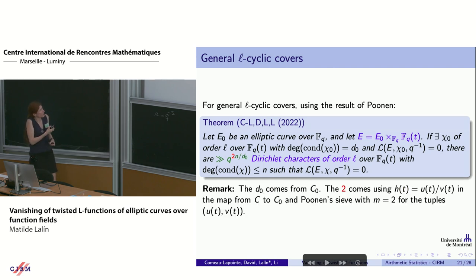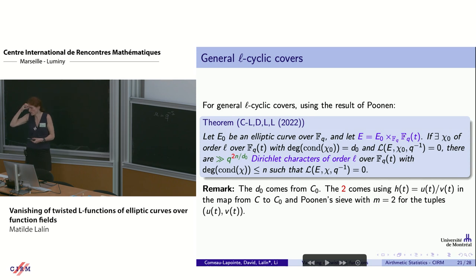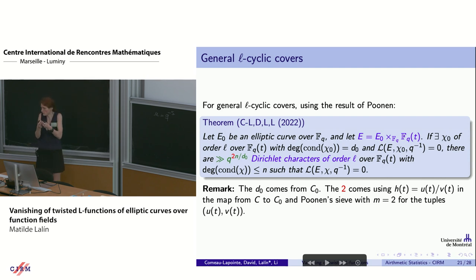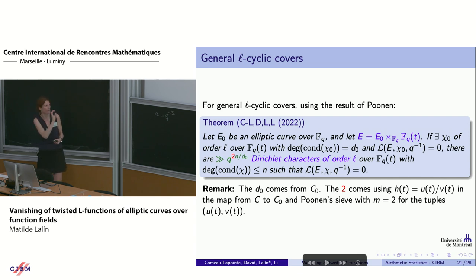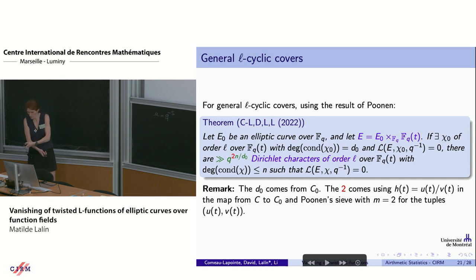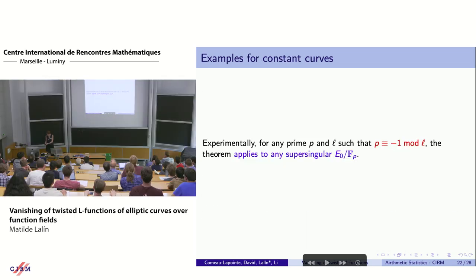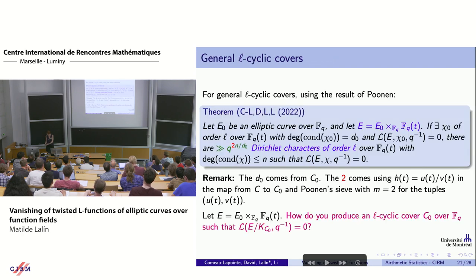Combining all these elements, we can prove the vanishing result. The factor of 2 that appears in all the results comes from applying Poonen's sieve with N=2, since you take your H as a rational function and when you homogenize, it has 2 coordinates.